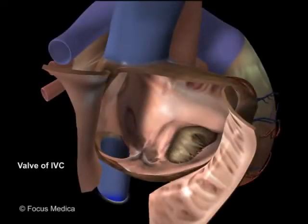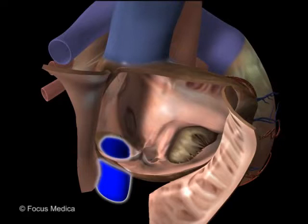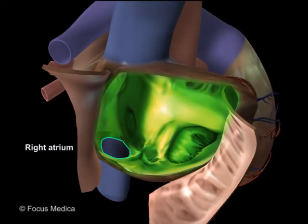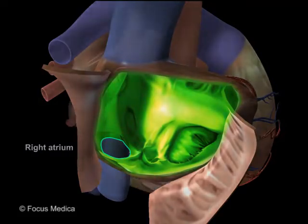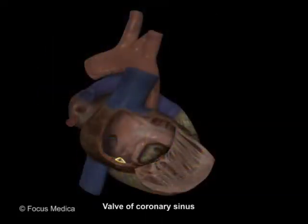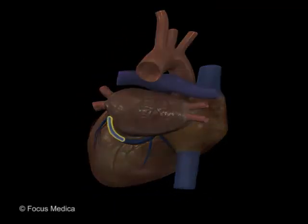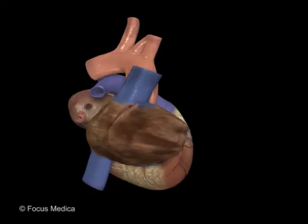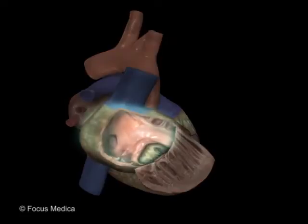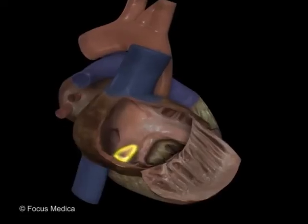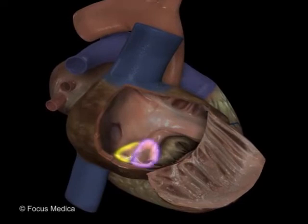The valve of the inferior vena cava is partial and is located at the point of entry of the IVC into the right atrium. The valve of the coronary sinus is also a hemivalve and is located at the point where the coronary sinus opens into the right atrium. The IVC valve and the coronary valve are side by side to each other and their upper ends meet together.